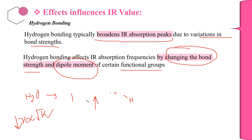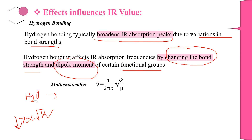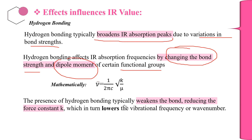Mathematically, ν̄ = 1/2πc √(k/μ). The presence of hydrogen bonding typically weakens the bond by reducing the force constant k, which in turn lowers the vibrational frequency or wavenumber.